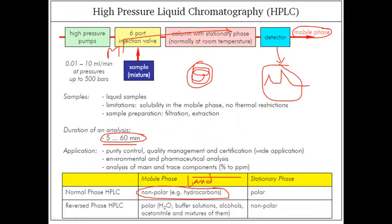What are the limitations? Sample solubility is definitely a limitation - solubility in the mobile phase. There are no thermal restrictions. We need sample preparation, filtration, and extraction. If the molecules or analyte you are using are non-soluble in hydrocarbon molecules, then we cannot use them in HPLC systems.